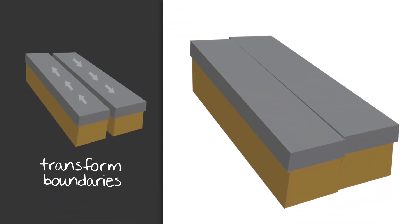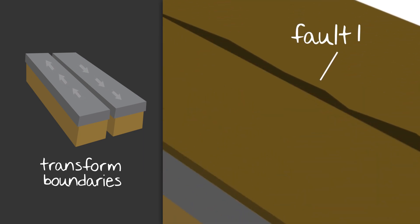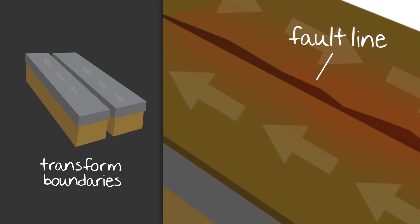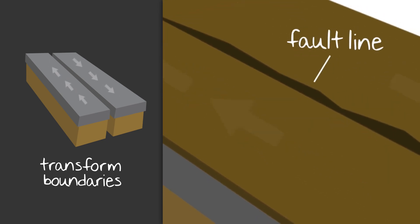At transform boundaries, the Earth's plates are sliding past each other in opposite directions, which creates a crack or fault in the Earth's crust. As the plates try to move, they rub against one another, resulting in the building up of pressure. If the plates are stuck for a long period of time, the pressure will continue to build at the fault line until eventually it releases, resulting in an earthquake.